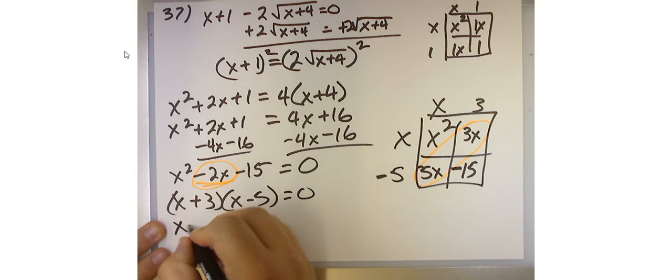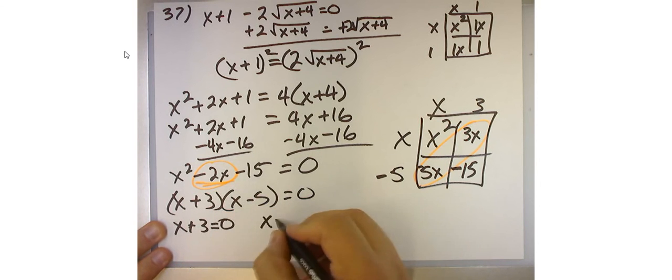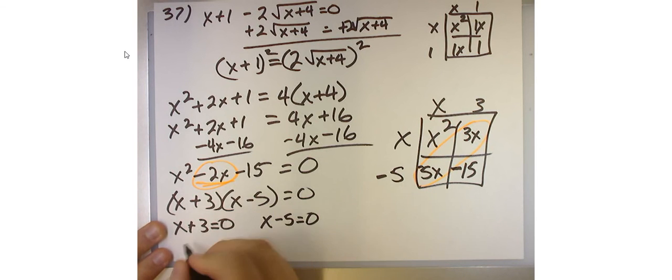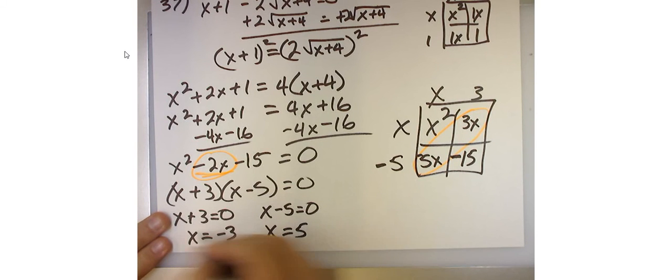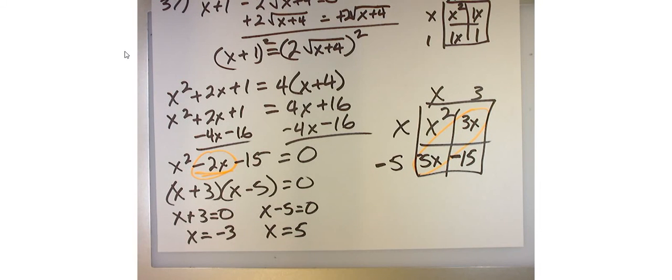Set both factors equal to 0. And I get x = -3 and x = 5. And those are my answers. Any questions?